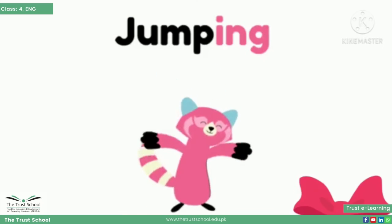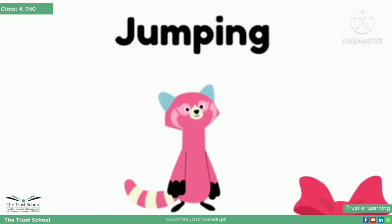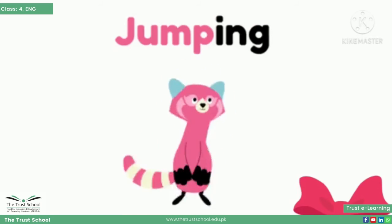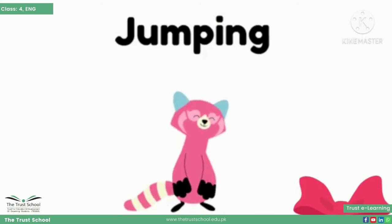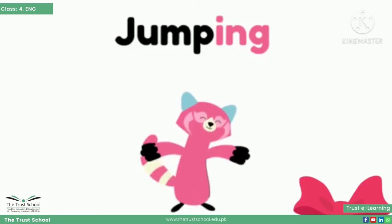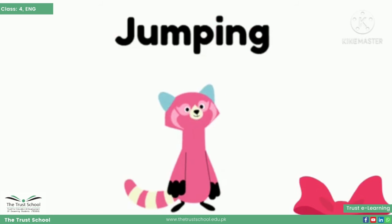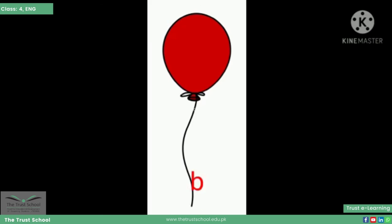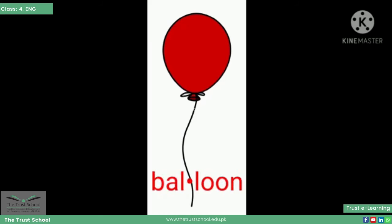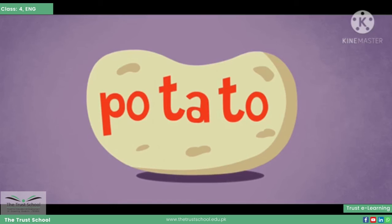An example of a two-syllable word is 'jumping'. War karayin to aapko 'jumping' word bolne ke liye do awaazain ada karni padi — isliye ye two-syllable word hai. 'Balloon' is also an example of a two-syllable word.